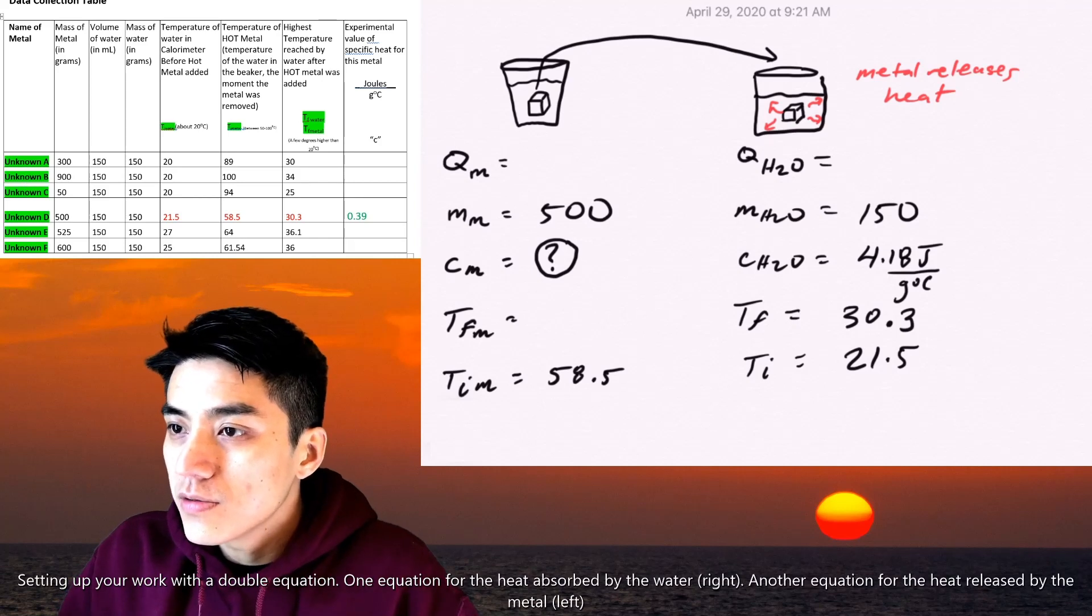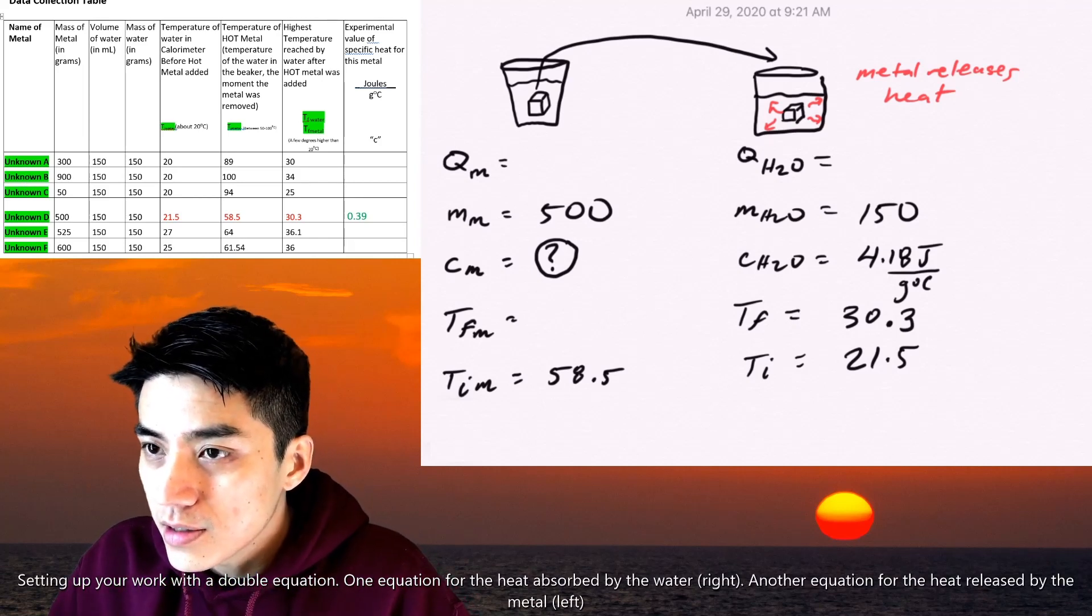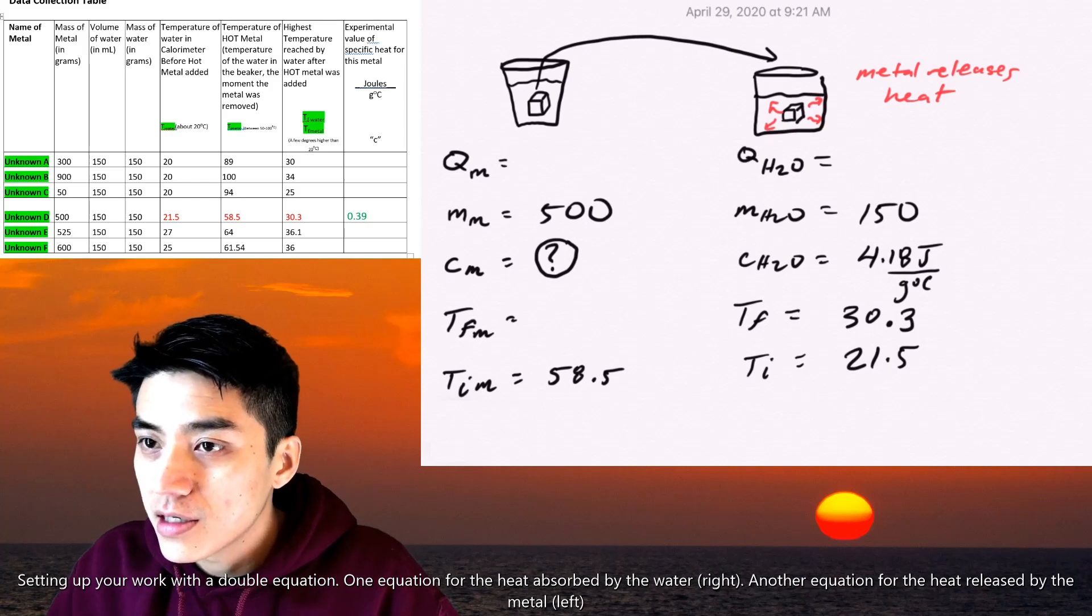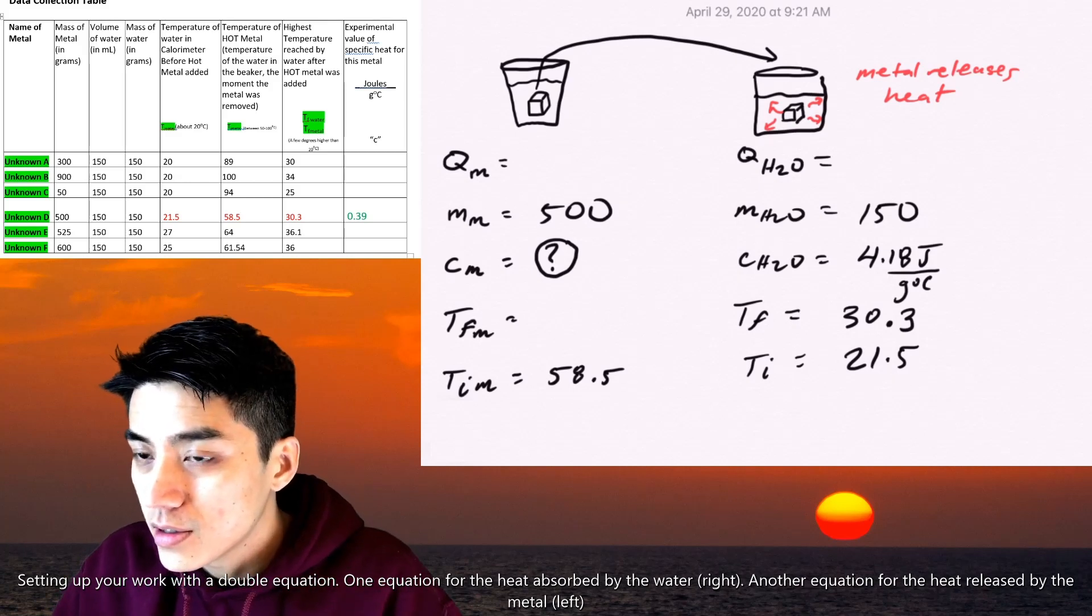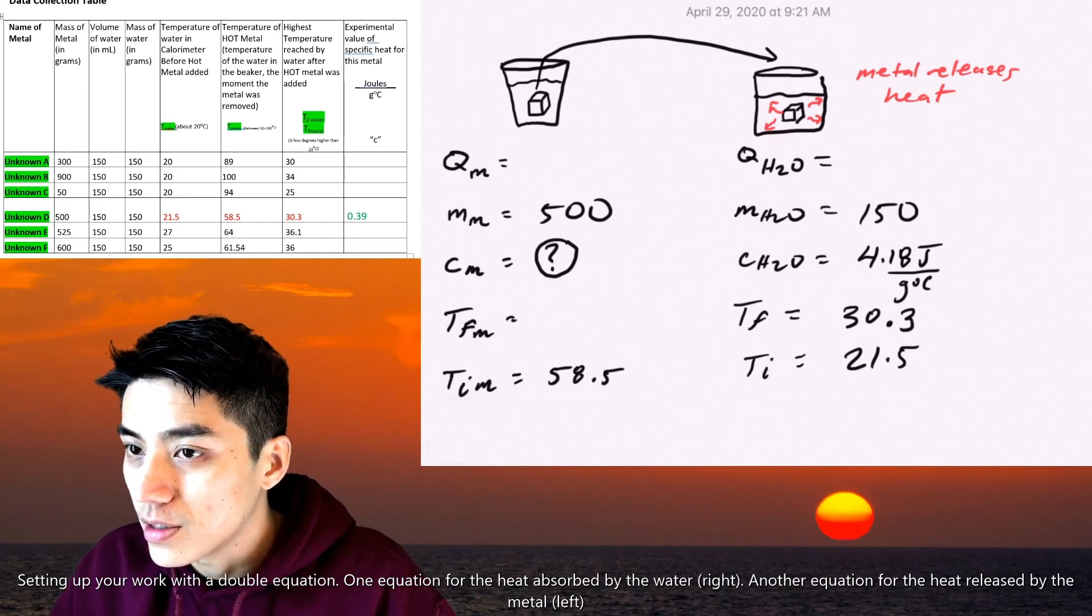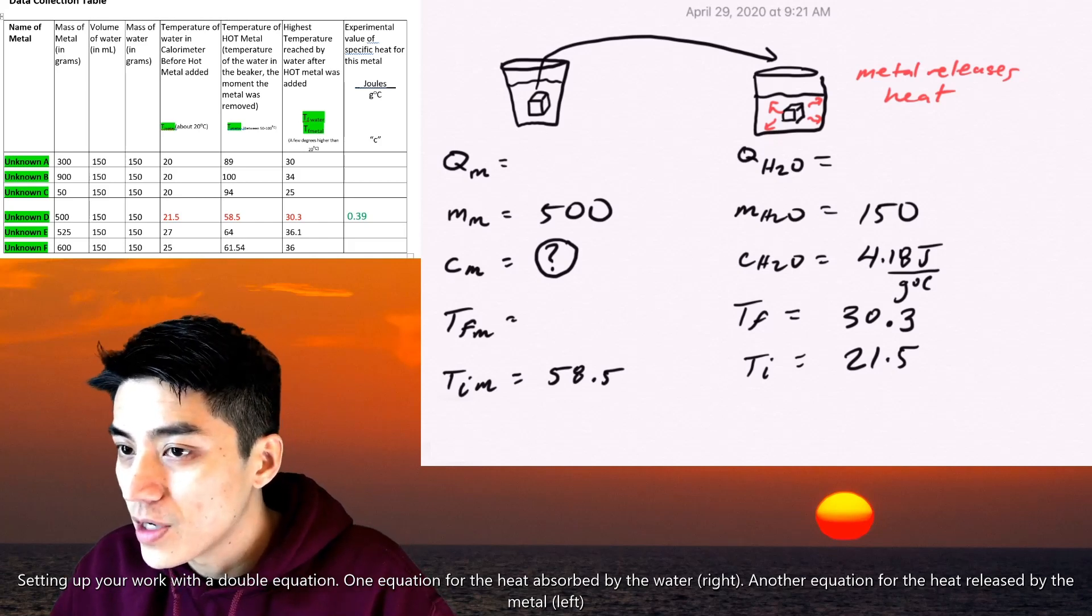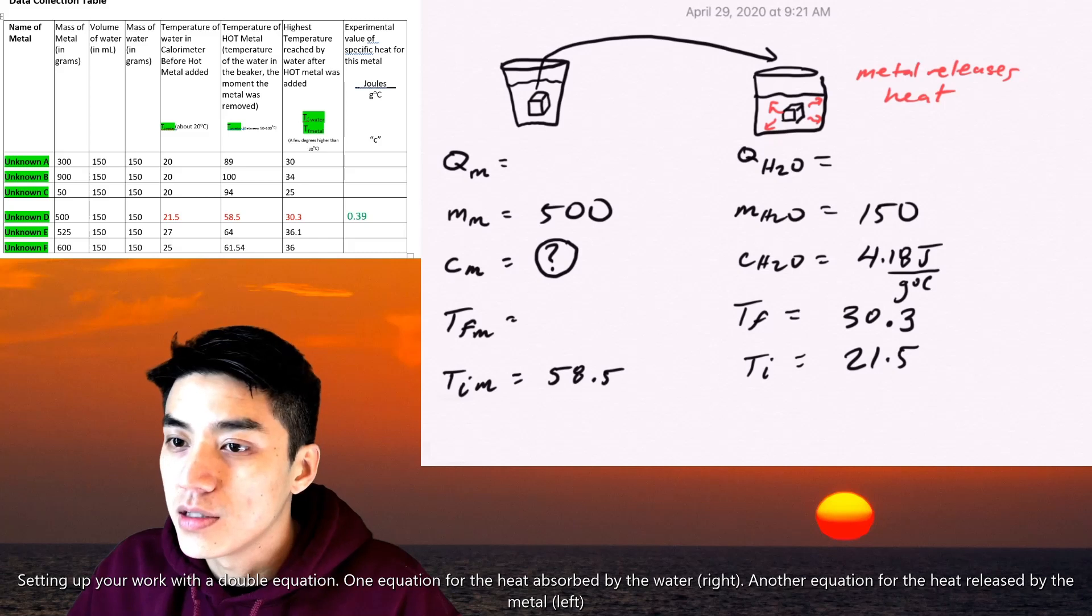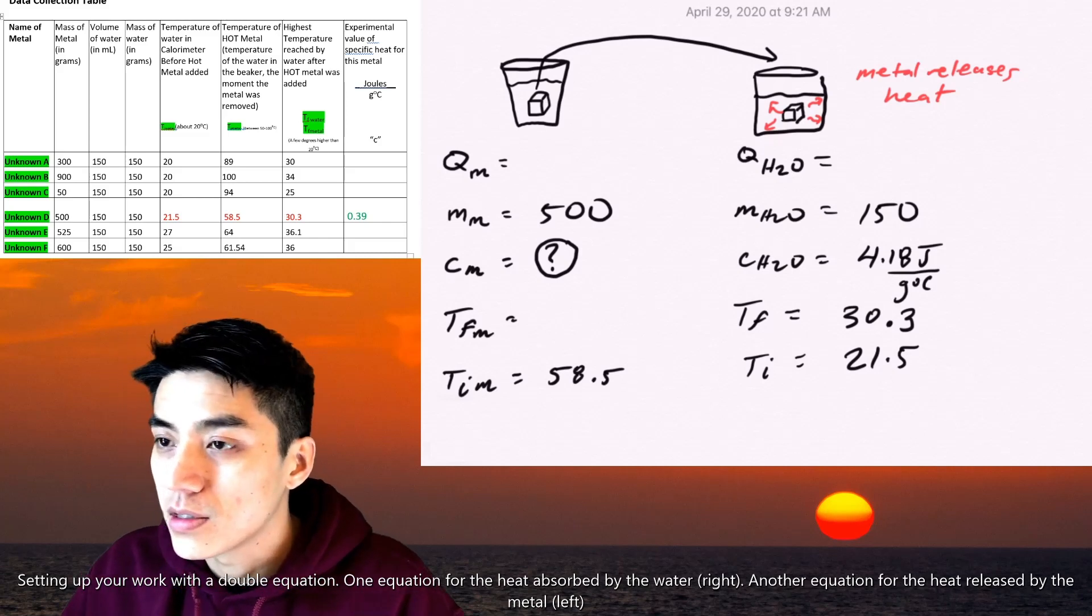This is easy if you just keep track of two things and stay organized. So on the left is anything, any data that's related to the metal. So you can see there all the labels have like a tiny M, like a baby M, next to it just represents metal. So like Q metal, that's the heat absorbed by the metal, M which is mass of the metal, C specific heat of the metal, and T final and T initial of the metal. So that's all on the left.